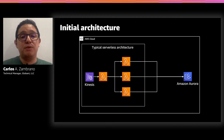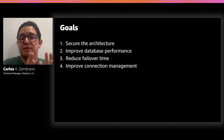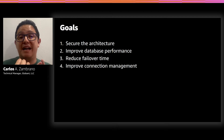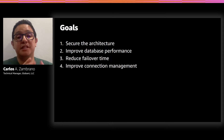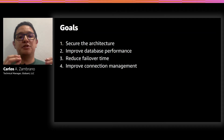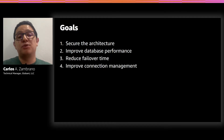In a typical serverless application, you have many Lambda functions ingesting through your database, which creates a lot of connections. There are four key challenges: first, security architecture — managing all the credential connections when different Lambda functions connect to the same database. Second, database performance in handling many connections. Third, failover time — for critical applications, you need to reduce failover time to zero. Fourth, connection management — ensuring all Lambda functions write correctly to the database.